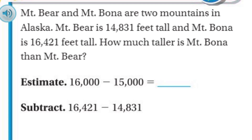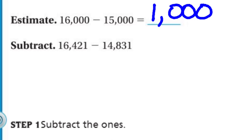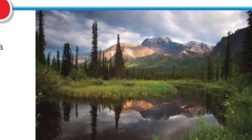They took the number 16,421 and said it's about 16,000. And then 14,831 was practically 15,000. So they said let's do a quick estimate. The estimate is 1,000. Now it says we're going to subtract 16,421 minus 14,831. Let's look at this picture real quick — that's gorgeous.